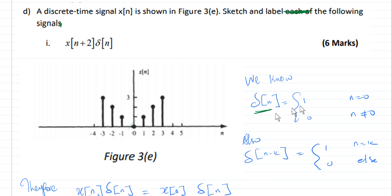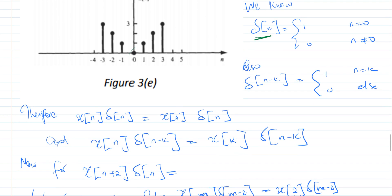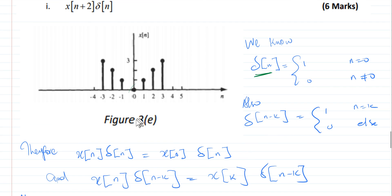So having said these few concepts, then we can now relate them with regard to our expression here. So how do we do that? We say now that we know that we can express x of n multiplying with delta of n as a multiplication of the value of x of n at 0 when n is equal to 0 multiplied by delta of n.